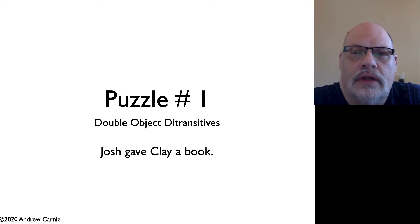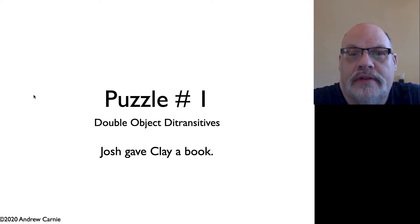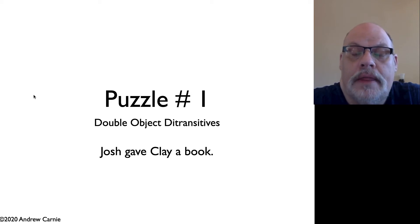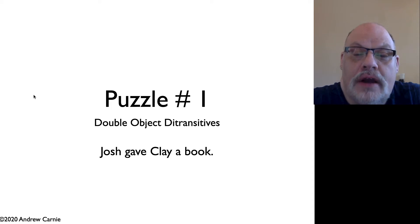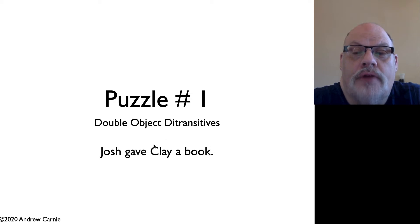We're going to look at a collection of puzzles. The first one is the double object ditransitive. These are sentences like 'Josh gave Clay a book,' where we have three arguments: Josh, Clay, and a book. But it appears as if we might have two complements, and that's not permitted by X-bar theory.